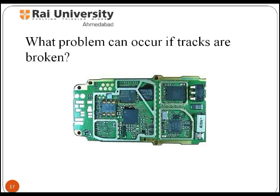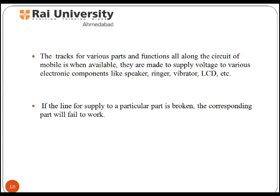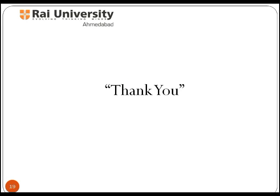What problems can occur if tracks are broken? The tracks for various parts and functions all along the circuit of a mobile phone are fabricated on the PCB board. They are made to supply voltage to various electronic components like the speaker, ringer, vibrator, LCD, etc. If the line or track supplying a particular part or component gets broken, then the corresponding component will not work. This way you can detect a fault by track checking.